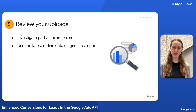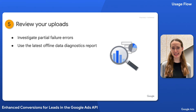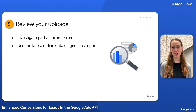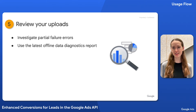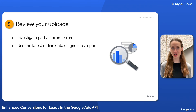Note that setting partial failure means any errors are returned in the partial failure error field of the API response. Lastly, review your uploads. When you're just setting up your enhanced conversions for leads integration, be sure to investigate and address any errors that came up in the partial failure error field. Once you've addressed any errors and completed your integration, review your uploads by querying for the latest offline data diagnostics report. If anything looks amiss, our troubleshooting guide can help you sort through issues.